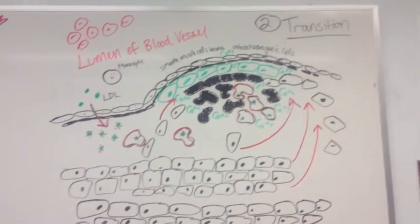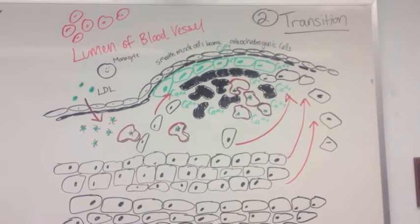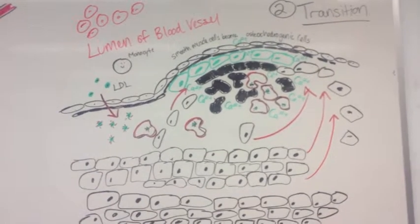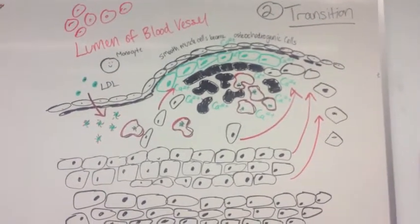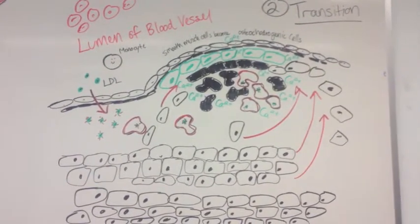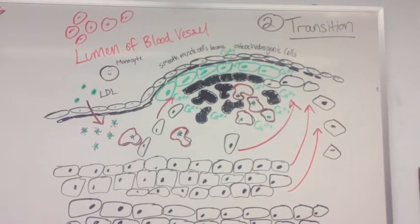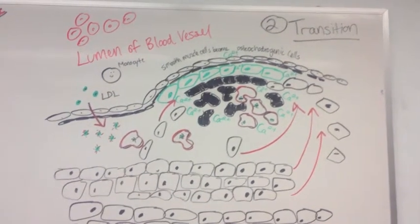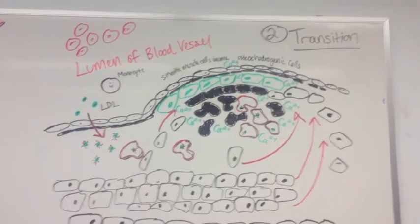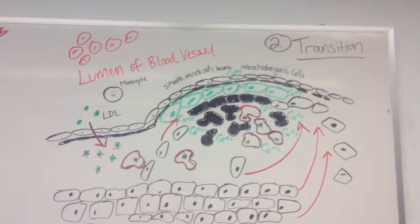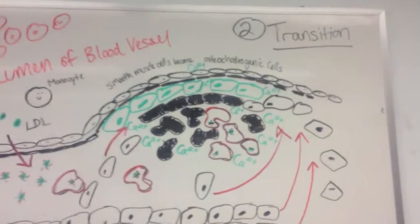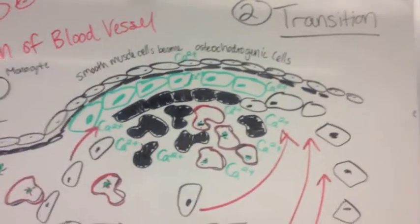The first layer of smooth muscle cells that migrated to the basement membrane die and contribute to the formation of the necrotic core. Additional smooth muscle cells are called in to form the fibrous cap and surround the necrotic core.